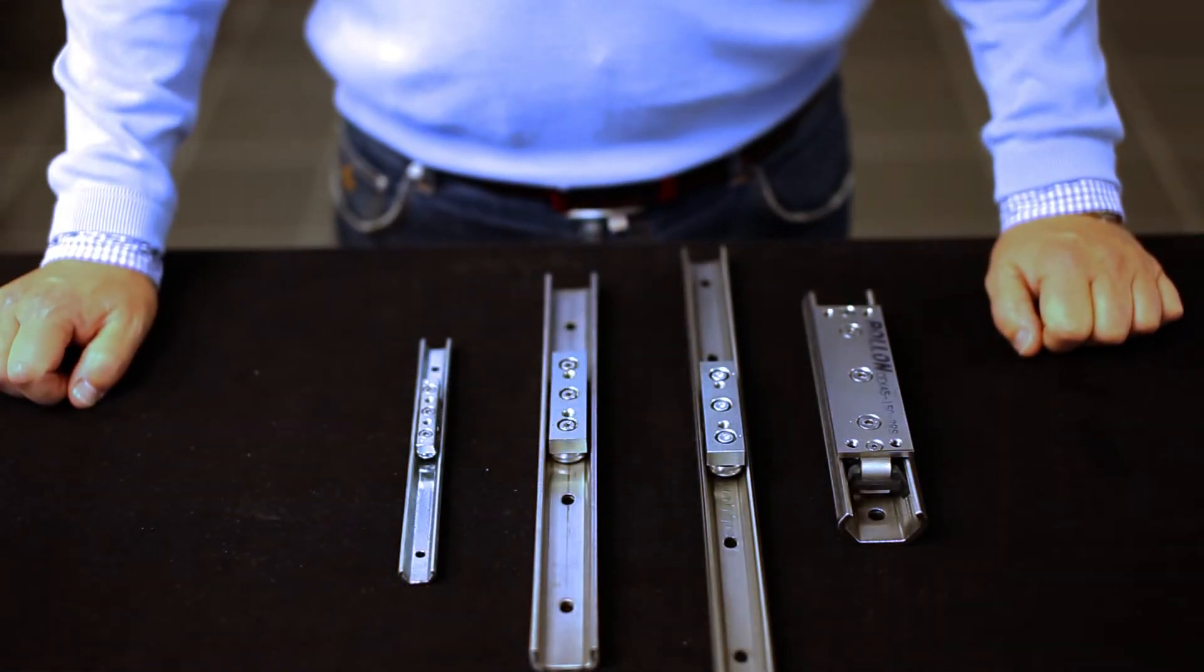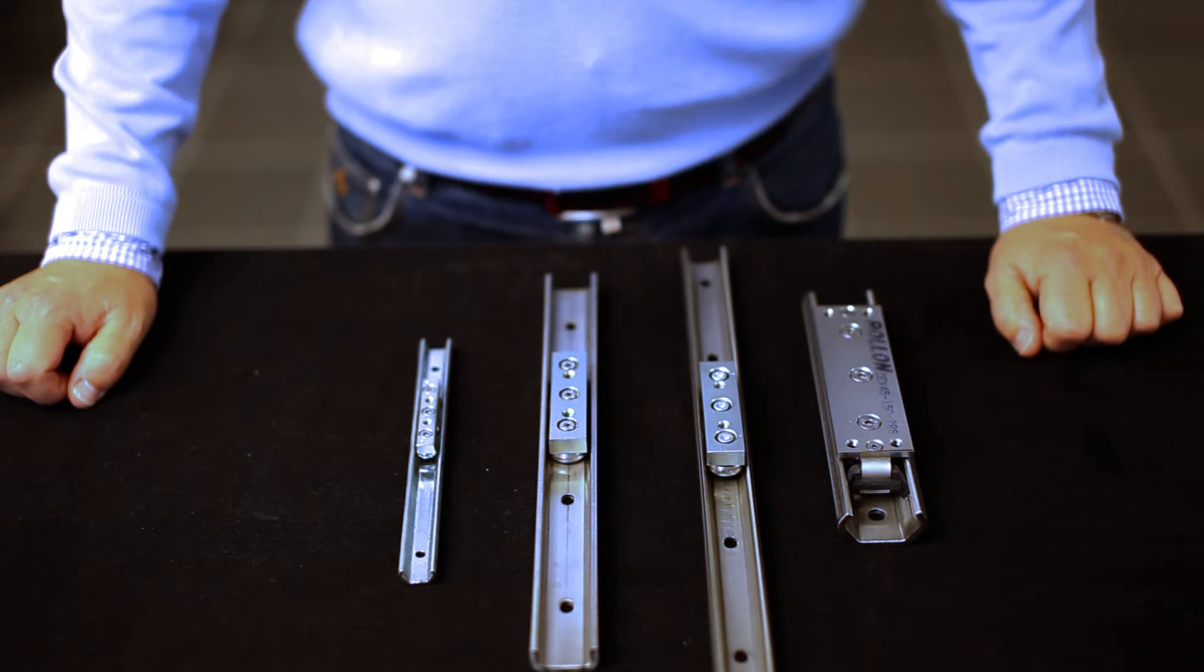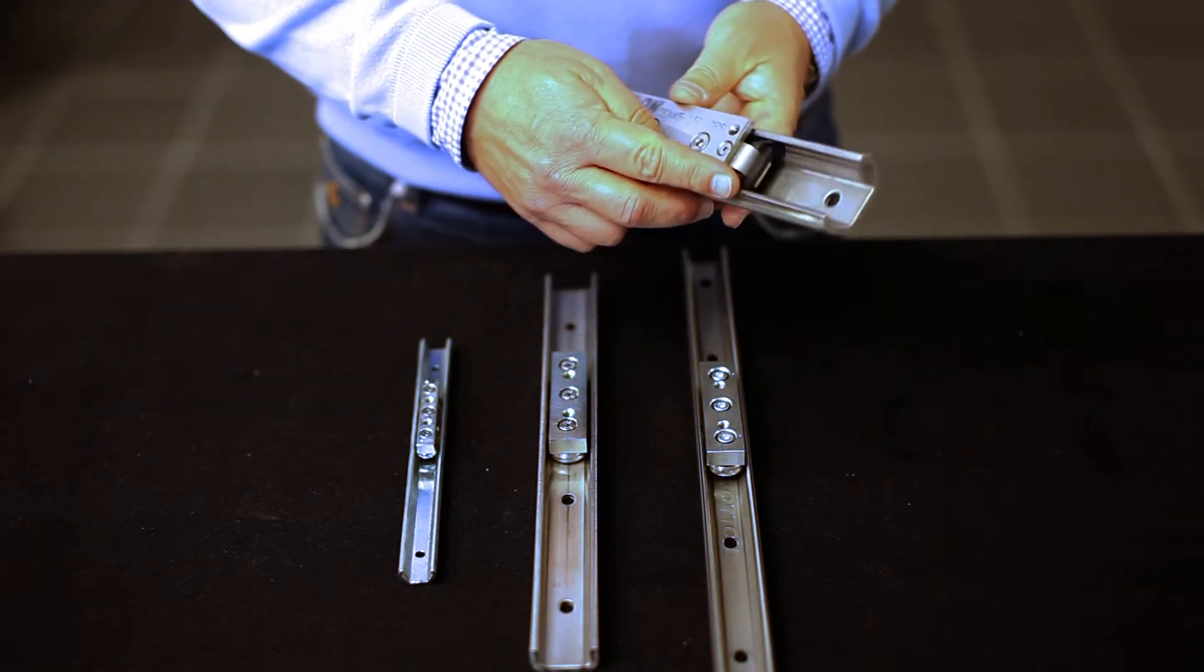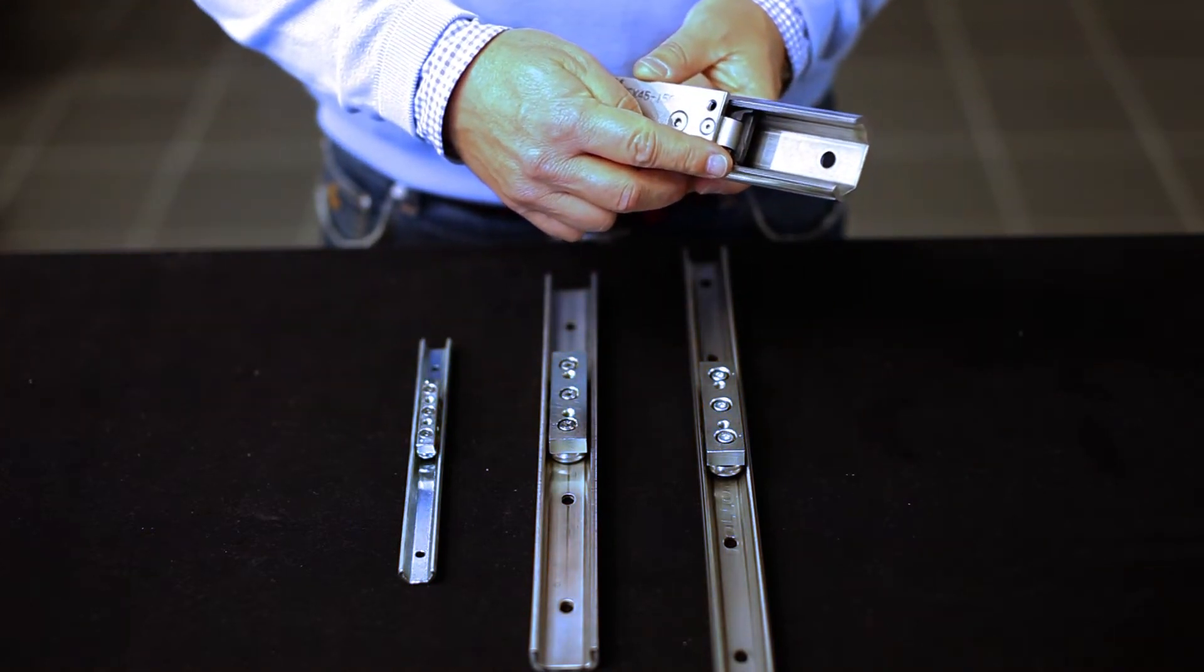C-Rail C-Rails are compact and low noise linear guides with low friction. The system has an inner raceway which protects from dirt and impurities.